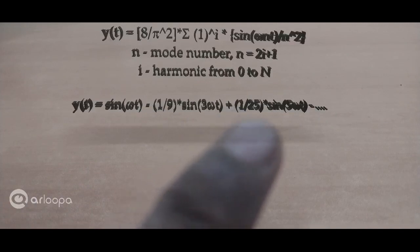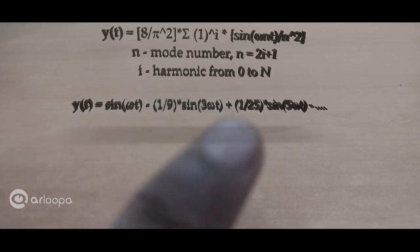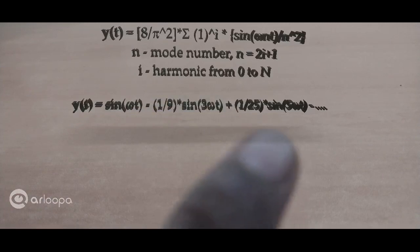Clearly 1/25 is way smaller than 1/9, which is smaller than 1. So this is a clear indication how the amplitude of the odd harmonics are going down rapidly as for a triangle wave.